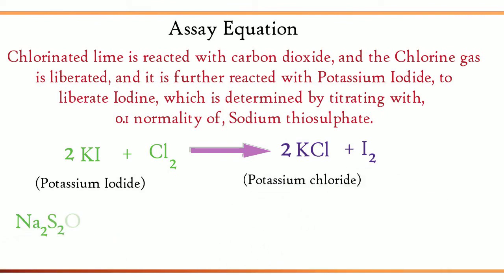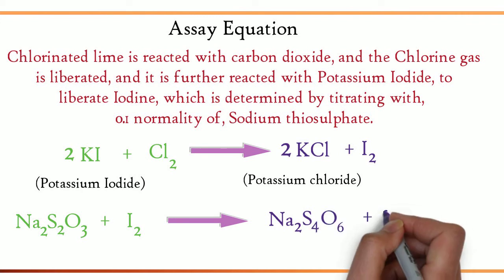Na2S2O3 plus I2 gives Na2S4O6 plus 2NaI.